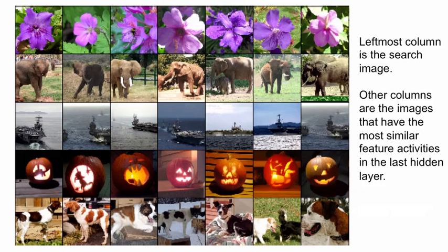In the column on the left you see the query images, and to the right you see all the things that were retrieved. If you look at the elephant query image, you'll see that what gets retrieved is other elephants, but elephants with very different poses — so those images wouldn't have a very good overlap in pixel space. If you look at the Halloween pumpkins, all the retrieved things are other Halloween pumpkins, and some would have a pretty bad overlap in pixel space. Similarly with the aircraft carrier, we retrieve other images of aircraft carriers that are very different. So we anticipate that if we could reduce these activity vectors to short binary codes, we would have a fast and effective way of retrieving similar images just by the content of the image.